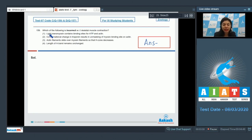Question 159: Which of the following is incorrect with respect to skeletal muscle contraction? Light meromyosin contains binding sites for ATP and actin. Conformational change in troponin results in unmasking of myosin binding site on actin. Actin filaments slide over myosin filaments so that H zone decreases. Length of A band remains unchanged.